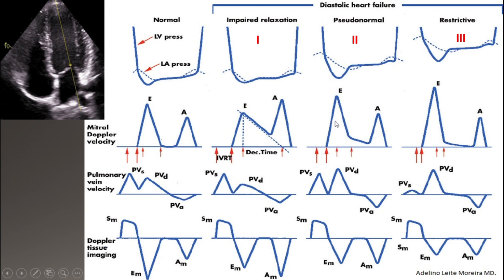With progressing diastolic dysfunction, left atrial pressure goes higher, resulting in a taller and narrower E wave. Deceleration time decreases and E velocity increases. At one point, E velocity becomes two times A, or even more.